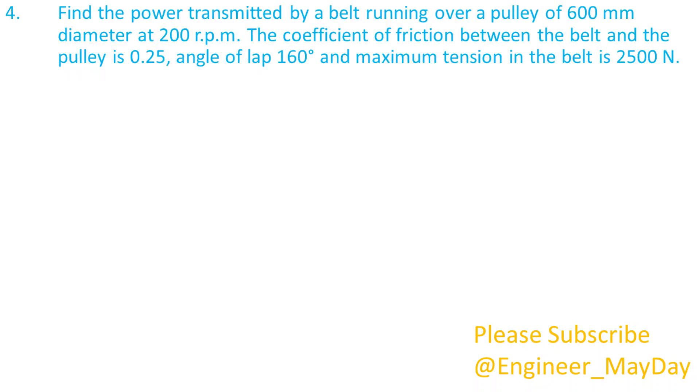Here is the last question. Find the power transmitted by a belt running over a pulley of 600 millimeters diameter at 200 rpm. The coefficient of friction between the belt and the pulley is 0.25, angle of lap 160 degrees and maximum tension in the belt is 2500 newtons.